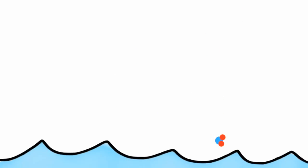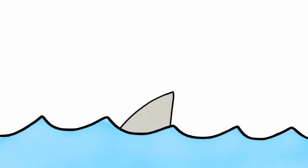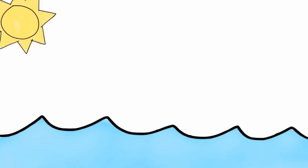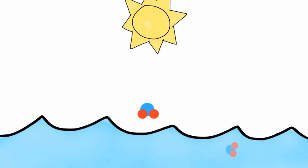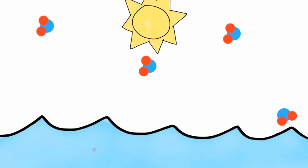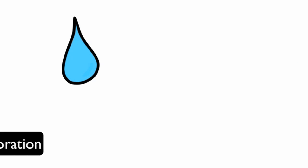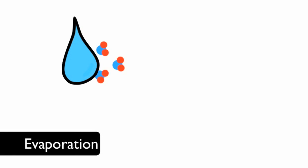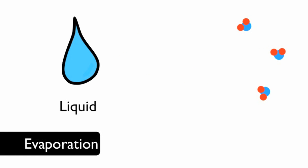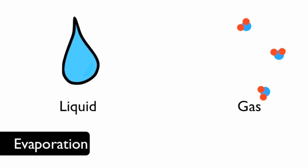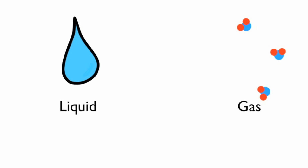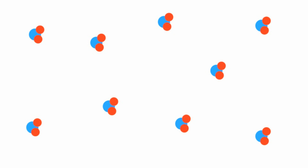About 97% of Earth's water can be found in the oceans. Every day, heat energy from the sun evaporates water from the ocean. Evaporation is when water changes from a liquid into a gas. The liquid becomes water vapor. Water vapor is hard to see, but it's in the air all around us.